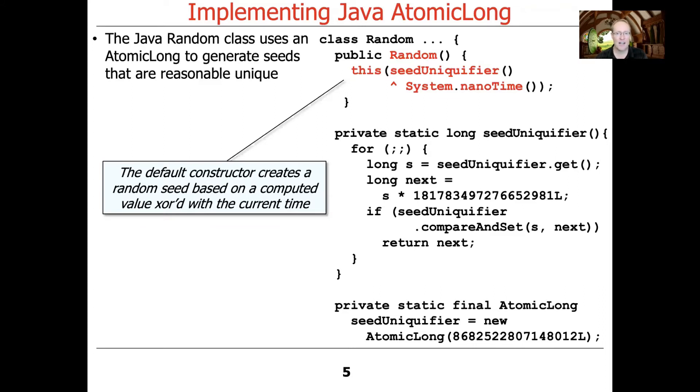And System.nanoTime, of course, is a monotonically increasing number, which should never repeat, because time marches on, as they say. And so what we're doing here is we're trying to create a random seed, or as random as we can get.